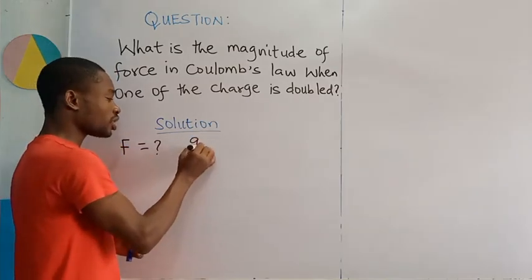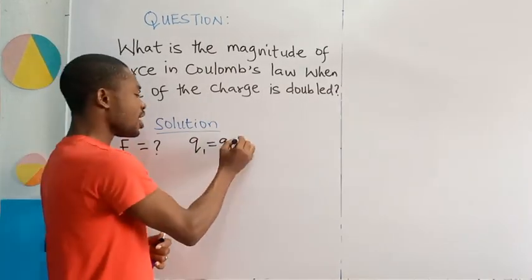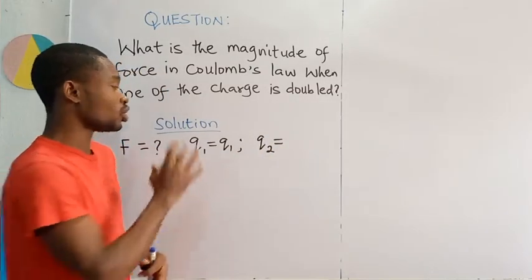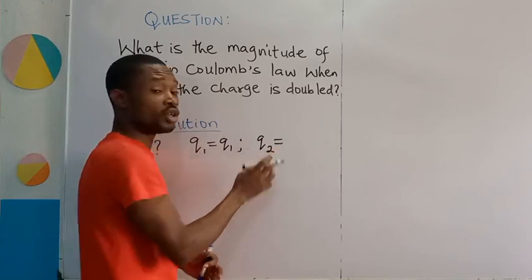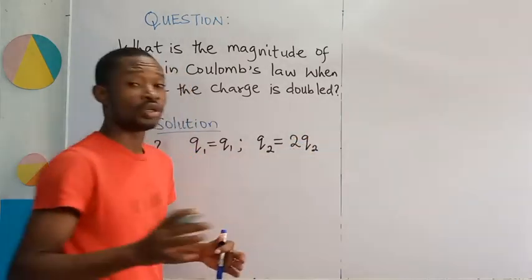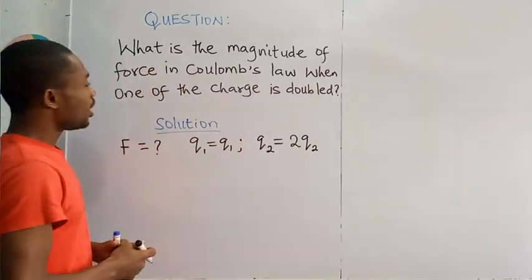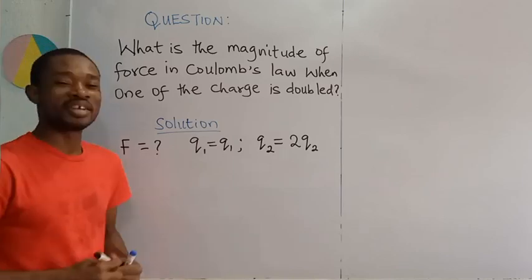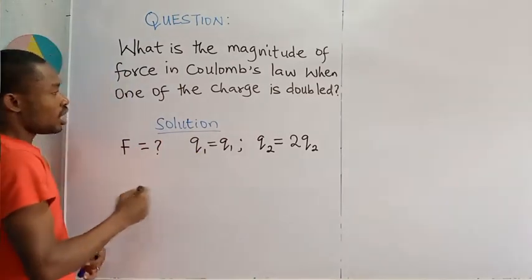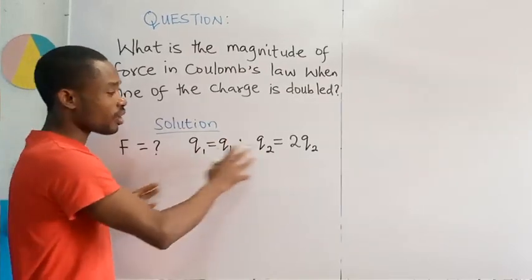Now, we are told from the question that one of the charge is doubled. When dealing with Coulomb's law there are two charges of interest. Let me take one of the charge Q1 to be Q1. And then, let us have Q2 and we are told that one of the charge is doubled. So, permit me to double the value of this Q2. To double something means you are going to have two times Q2. So, one of this charge has been doubled, twice. And we are asked to find the magnitude of the force which we are going to obtain from Coulomb's law.